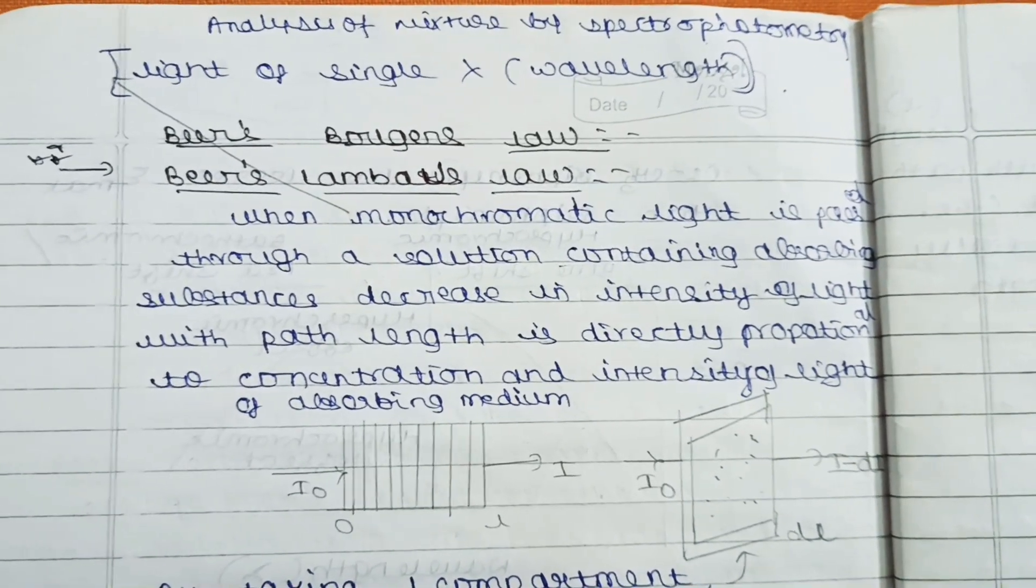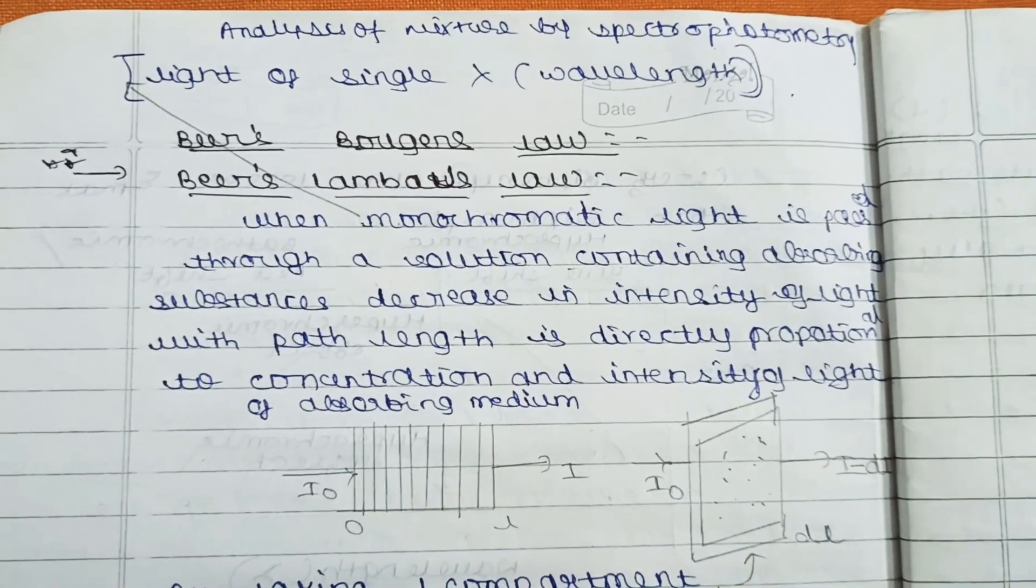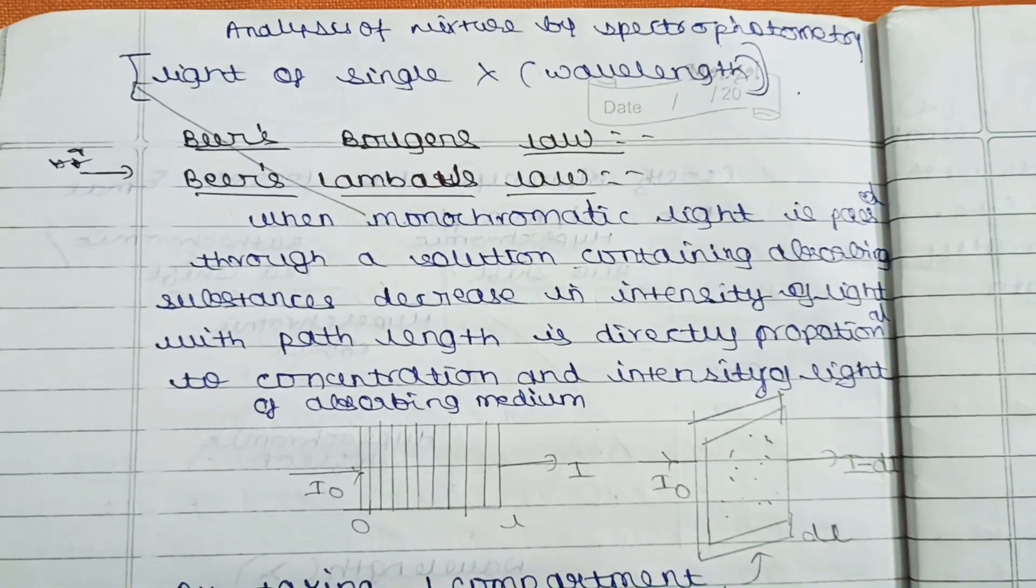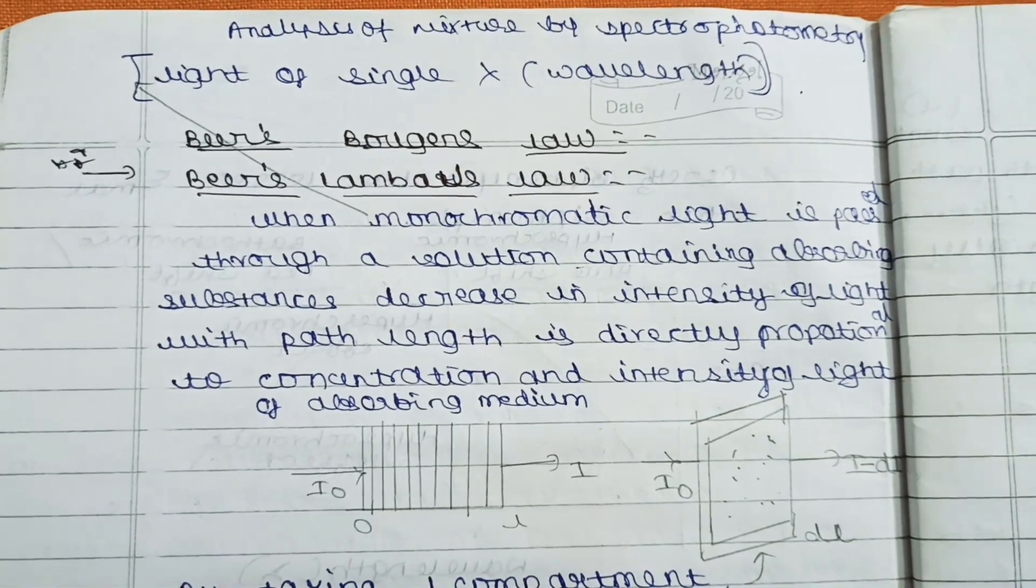Both deal with the analysis of mixtures by spectrophotometry. It mainly states when monochromatic light is taken—monochromatic light means light of a single wavelength.